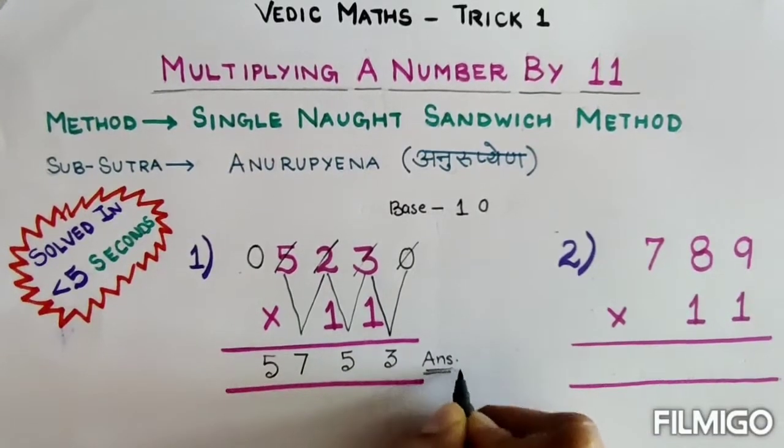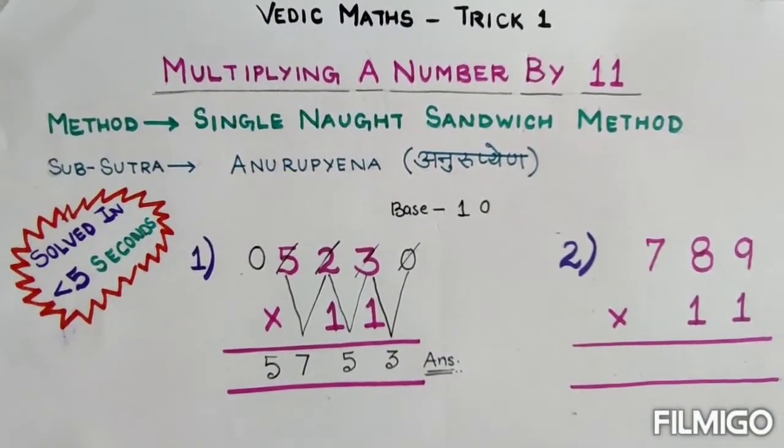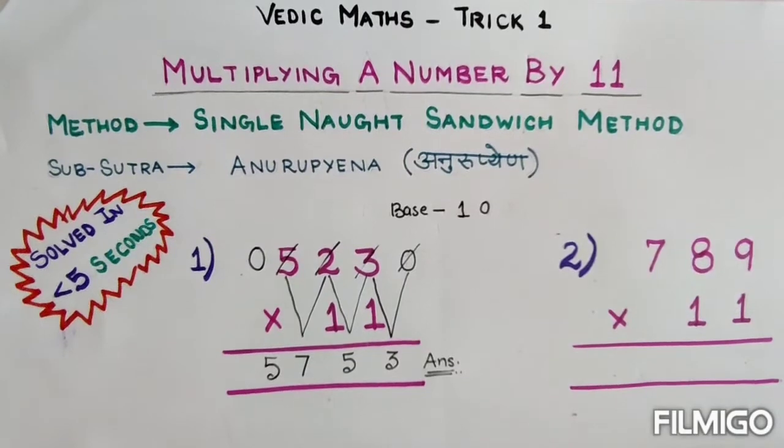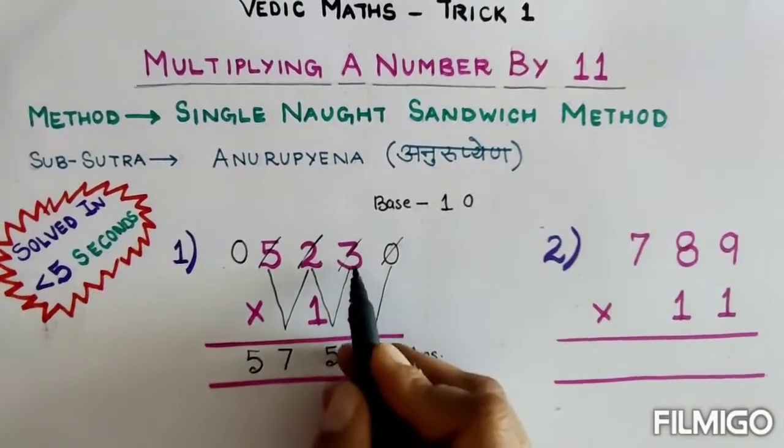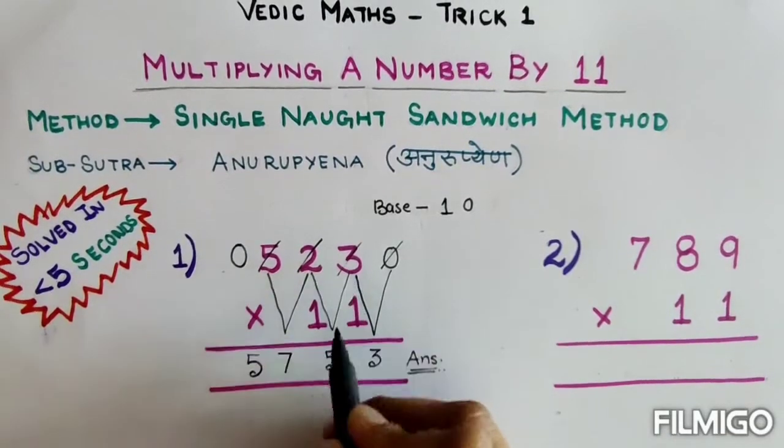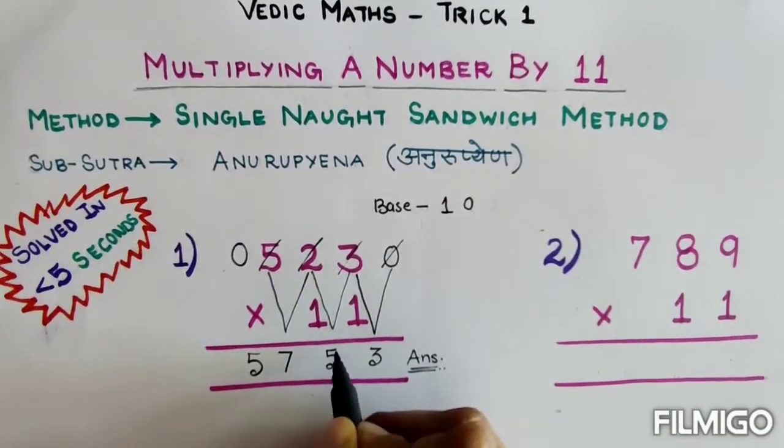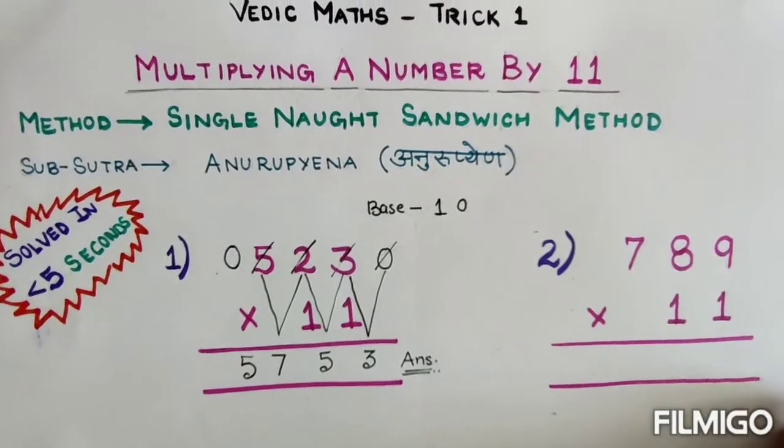This is a quick method to multiply any number by 11. But what if I have a number which is giving me addition greater than or equal to 10? I have taken another example.